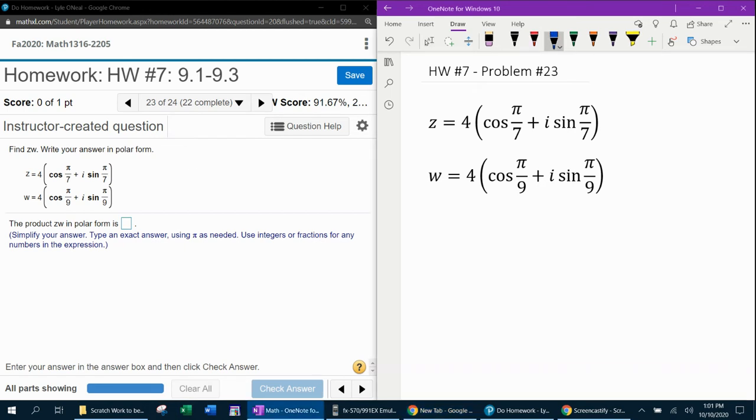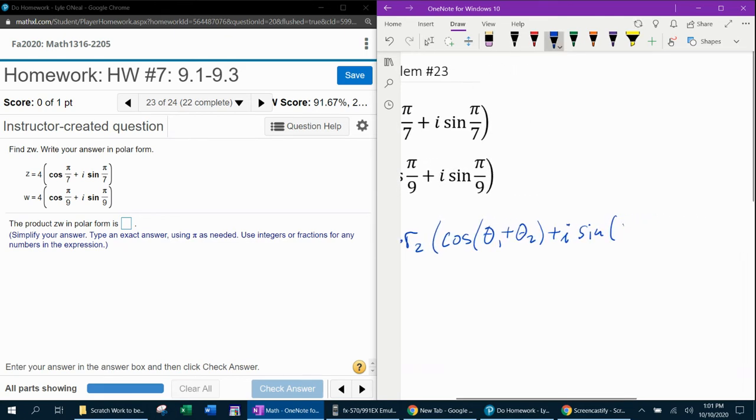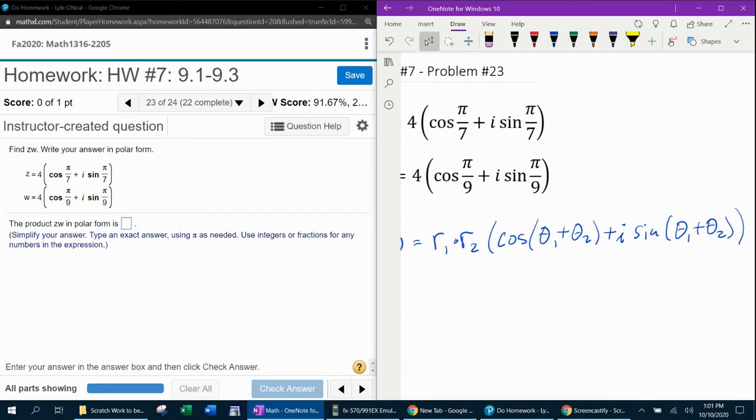Let me start with the formula. If you want to find Z times W, the product of two complex numbers in polar form, the formula is R1 times R2 cosine of theta one plus theta two plus i sine of theta one plus theta two. So if I break that down for you into the basics, what you basically need to know is that you're going to multiply the radii and you're going to add the angles. And that's really all you have to do here.